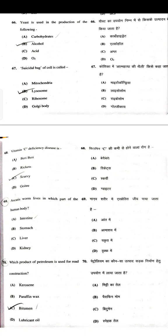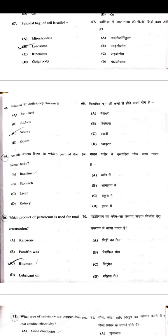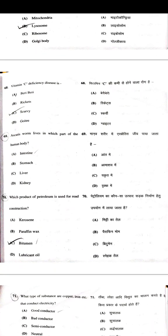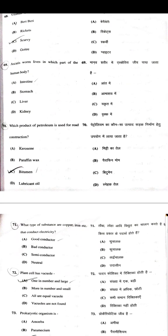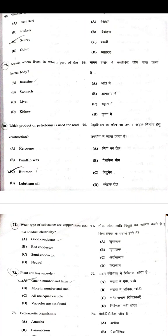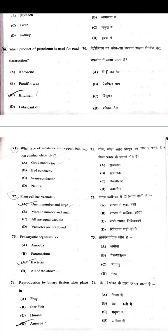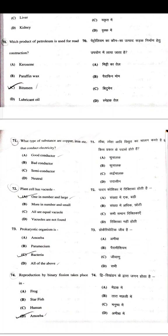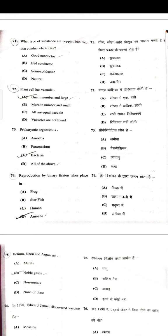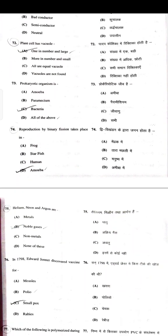Yeast is used in the production of alcohol. The suicidal bag of the cell is called lysosome. Vitamin C deficiency disease is scurvy. Ascaris worm lives in which part of the human body — Intestine. Which product of petroleum is used for roads — Bitumen. Copper, iron, etc. that conduct electricity are called good conductors. Plant cell vacuole is one in number and large.